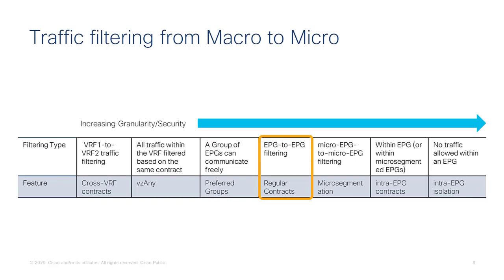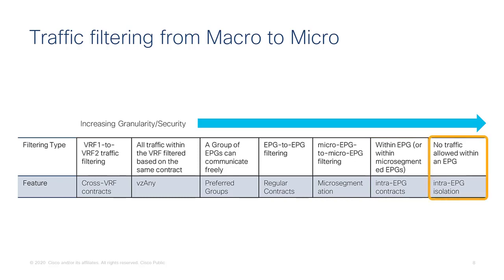You can also have a regular EPG-to-EPG filtering configuration done with the normal contract setup, or configure contracts between micro-segmented EPGs. Additionally, you can configure traffic filtering within an EPG itself, or have no traffic allowed within an EPG at all using intra-EPG isolation.